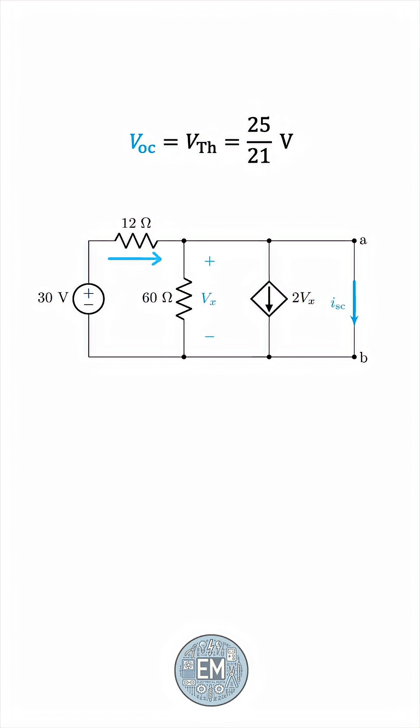In other words, this short-circuit current is the current leaving the source, 30 over 12, which is 5 over 2 amperes.